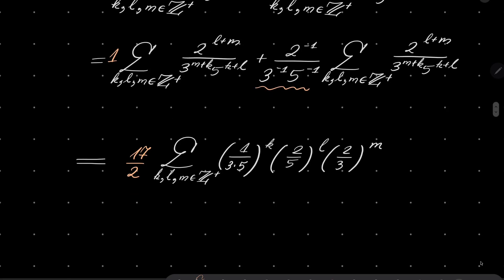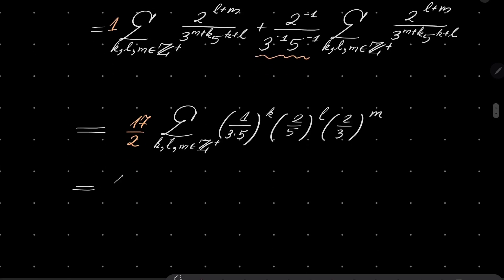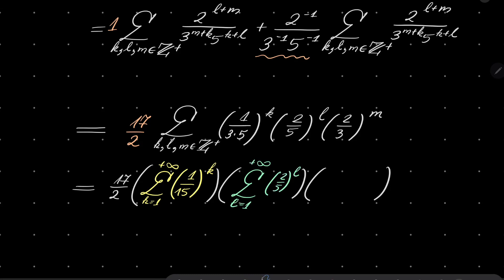And now I will split this into three different geometric series. First series goes from k equals 1 to infinity: 1/15 to the power of k. Then we have the series from l equals 1 to infinity: 2/5 to the power of l. Finally, we have the sum going from m equals 1 to infinity: 2/3 to the power of m.